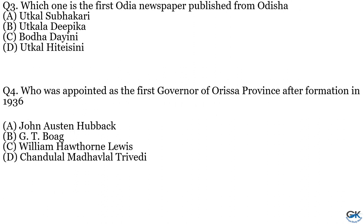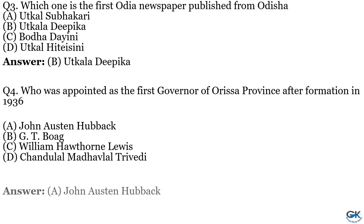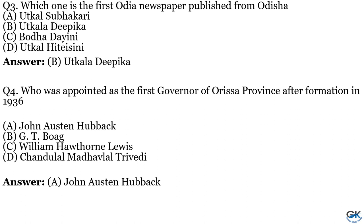Question No. 3: Which one is the first Odia newspaper published from Odisha? The answer is Option A. Question No. 4: Who was appointed as the first governor of Odisha province after its formation in 1936? Option A: John Austin Hubbach. Option D: Chandu Lal Madhava Lal Trivedi. The answer is Option A, John Austin Hobbuck.